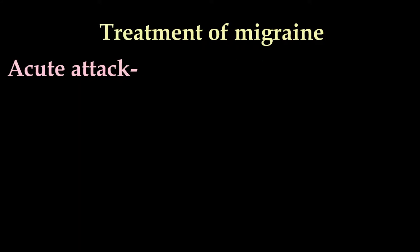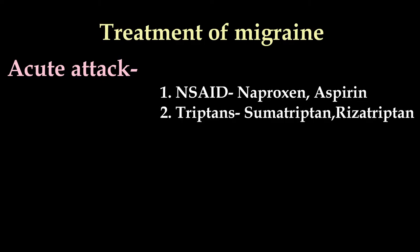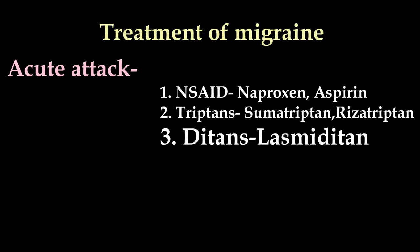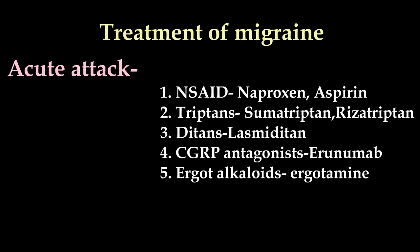An acute attack of migraine can be aborted by the following: NSAIDs like aspirin, ibuprofen, and naproxen — however, long-term use is not advisable as it causes gastric ulcers and kidney failure. Triptans like sumatriptan and rizatriptan can be taken early in the attack. Ditans like lasmiditan, CGRP antagonists like erenumab, and ergot alkaloids are also options. Ergot alkaloids can precipitate gangrene of digits in those with poor circulation and also a heart attack in those prone to it.